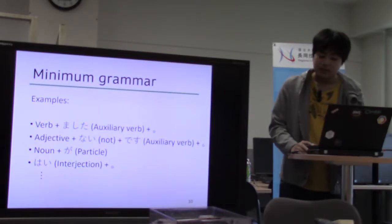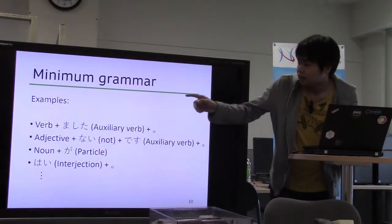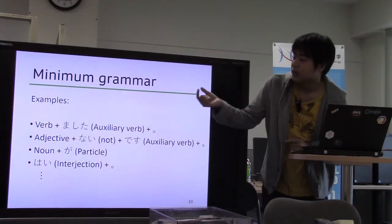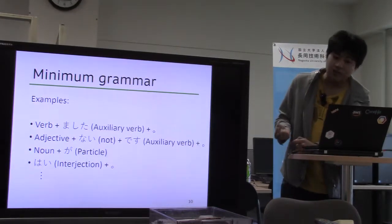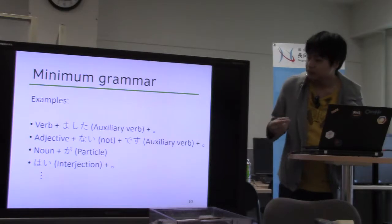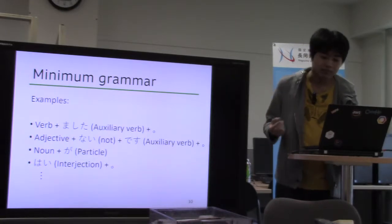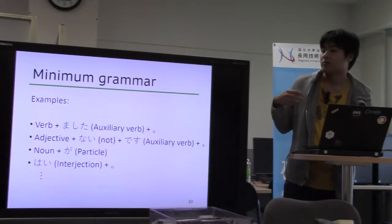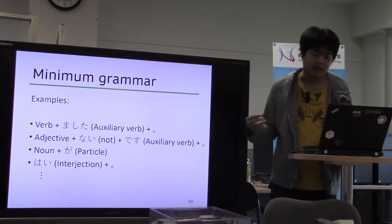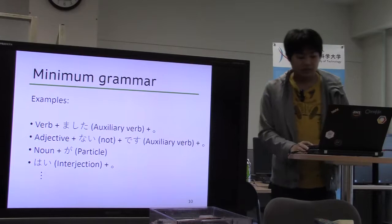This is an example of minimum grammar. Minimum grammar is defined by word part of speech, word surfaces, and their sequence. For checking minimum grammar, the sentence needs morphological analysis. There are about 120 rules.